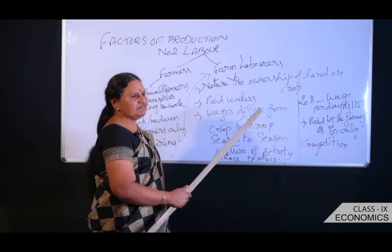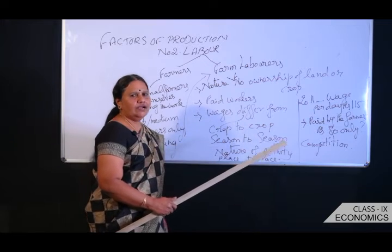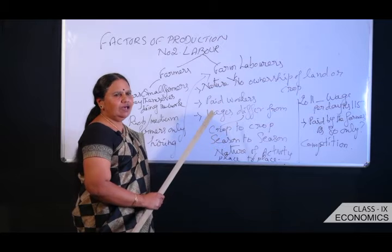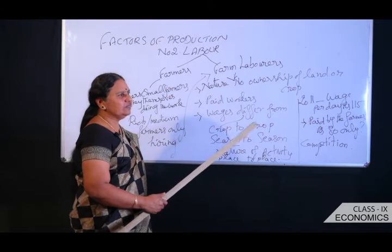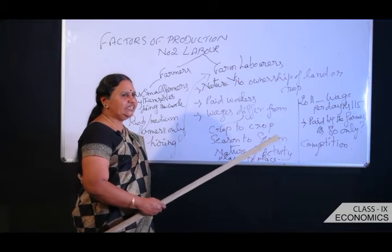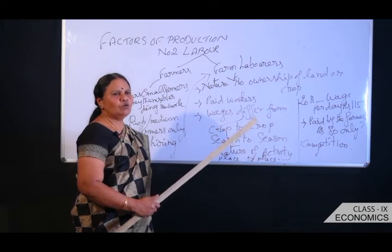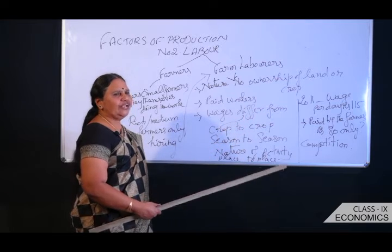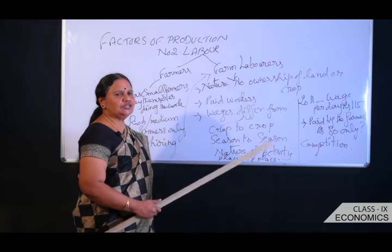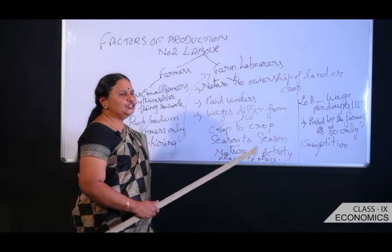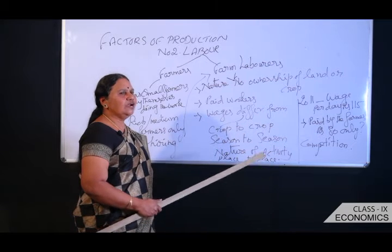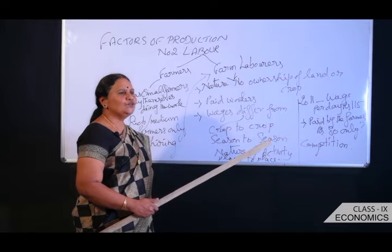The conversation between Dala and Ramkali in your textbook illustrates this. Both are paid workers narrating how rich farmers exploit them and how their days of work are getting fewer due to the introduction of modern machinery like tractors, threshers, and harvesters. They are getting low wages and work for only about 2 to 3 months in a year.